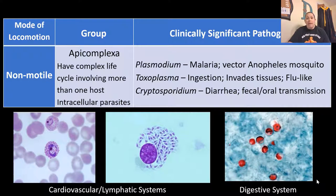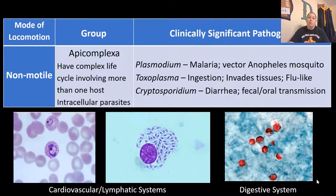Another group is non-motile — they don't have the ability to move on their own and utilize vectors. This group is called the Apicomplexa and they get this name because they have a super complex life cycle, moving between more than one host and acting as intracellular parasites throughout the cycle. Plasmodium is responsible for malaria, transmitted specifically by Anopheles mosquitoes. Toxoplasma is given through ingestion, invades tissues, and gives you flu-like symptoms. Cryptosporidium causes diarrhea and enters through the fecal-oral route.